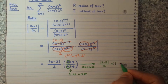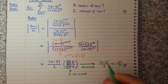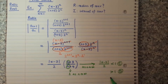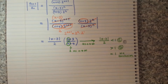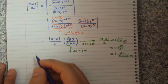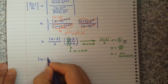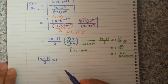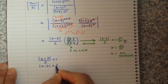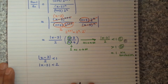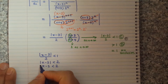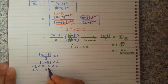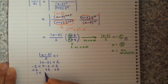By the ratio test: if this limit is less than 1, the series is convergent (absolutely convergent); if greater than 1, it's divergent; if equal to 1, there is no conclusion. I prefer to solve the inequality |x minus 3| / 2 < 1. Multiplying both sides by 2 gives |x minus 3| < 2, which means −2 < x−3 < 2, and adding 3 gives 1 < x < 5.